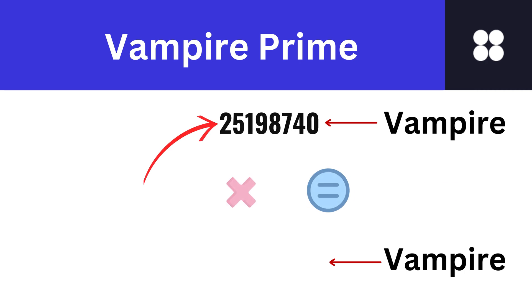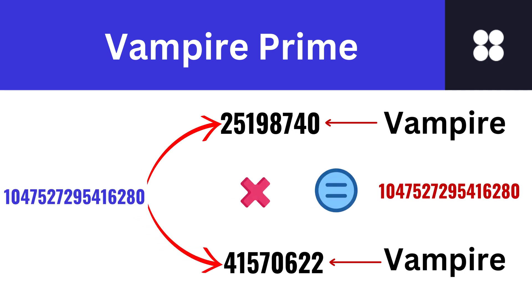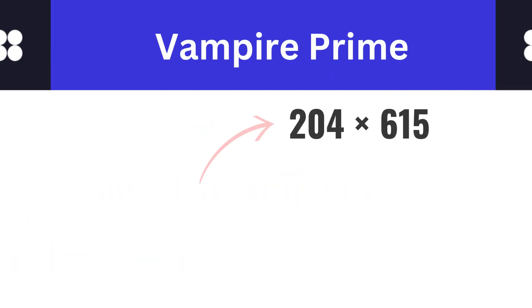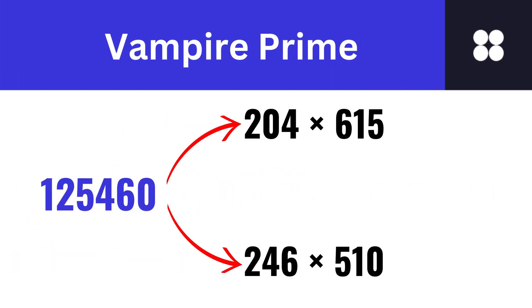A double vampire number is a vampire number whose FANGs are also vampire numbers. An example of the smallest such number is shown on screen. A vampire number can also have multiple distinct pairs of FANGs — the first of infinitely many vampire numbers with two pairs of FANGs are shown on screen.